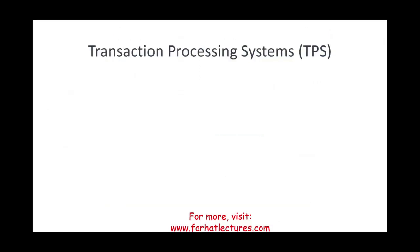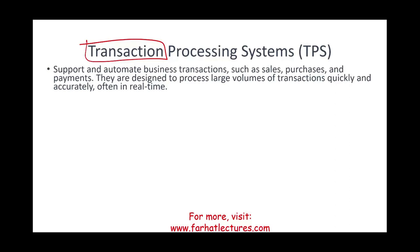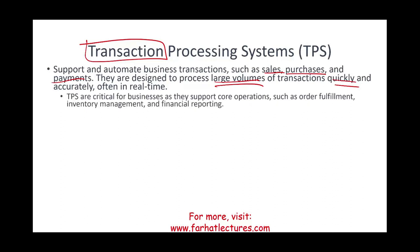We could also have a Transaction Processing System, or TPS. You may be familiar with this system or work with it without even knowing it. A TPS processes transactions — in any place of work, whether you are buying, selling, being paid, or paying suppliers. It supports and automates business transactions: sales, purchases, and payments. TPS systems are designed to process large volumes of transactions quickly and accurately, often in real time. They are critical for businesses, supporting core operations such as order fulfillment, inventory management, and financial reporting.